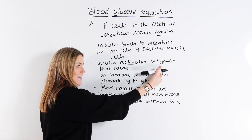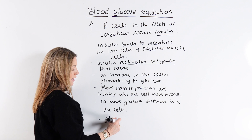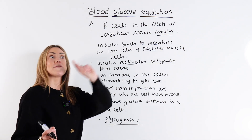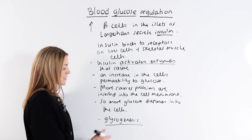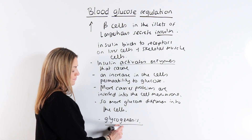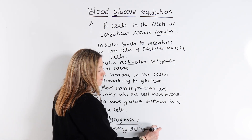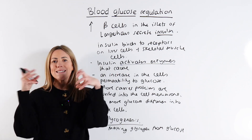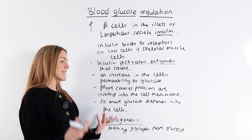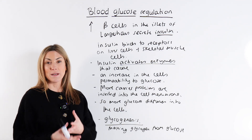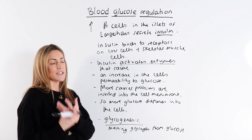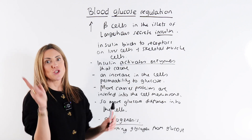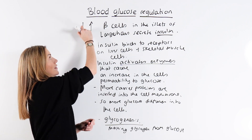Insulin also activates enzymes that cause glycogenesis. Don't say insulin causes glycogenesis — insulin activates enzymes, and it's those enzymes within the cell that actually cause glycogenesis. Glycogenesis, as the name suggests, is making glycogen from glucose. Glucose is joined together with many glycosidic bonds and stored as glycogen in the liver cells and skeletal muscle cells. Glycogen is large, insoluble, and highly branched — perfect for storage — and ultimately the glucose is removed from the blood, so blood glucose level returns to normal.